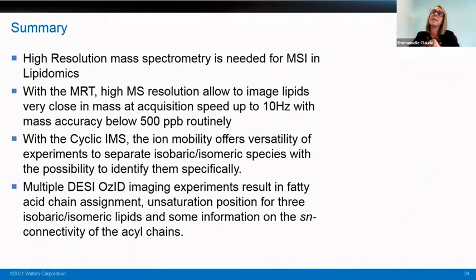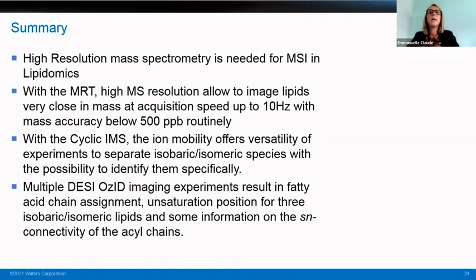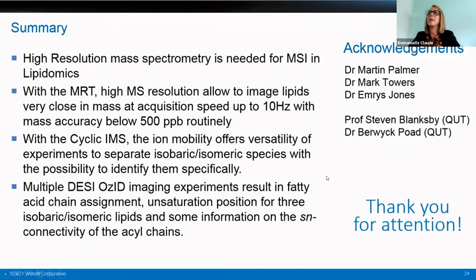So I hope I've shown you how high-resolution mass spectrometry is really needed for mass spec imaging in lipidomics, how the MRT with high MS resolution and mass accuracy at high speed can really help differentiate lipids with close masses, how the cyclic IMS offers versatility in types of experiments to separate isobaric and isomeric species, and how the new DESI-OZID imaging experiments give fatty acid chain assignment, unsaturation position, and SN connectivity within isobaric and isomeric lipids. I'd like to thank my colleagues at Waters and Professor Stephen Blanksby and Dr. Beric Poad at QUT. Thank you for your attention.